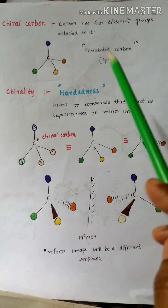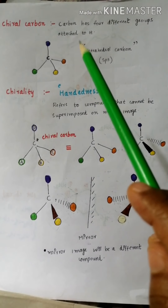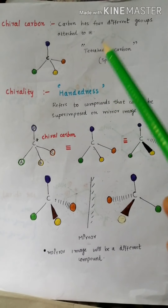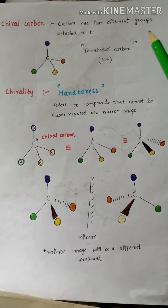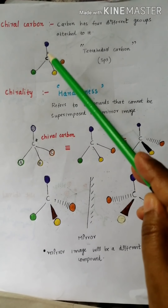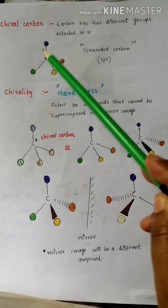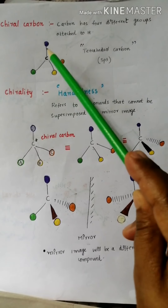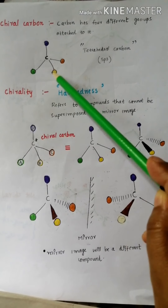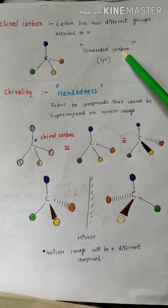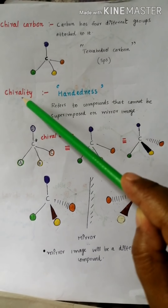What do we mean by chiral carbon? A chiral carbon is a carbon that has four different groups attached to it. This carbon is attached with four different groups of atoms, and its geometry is always tetrahedral.